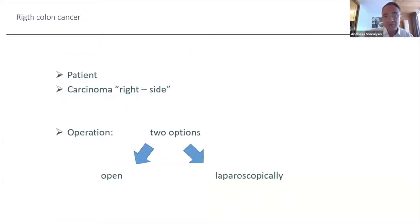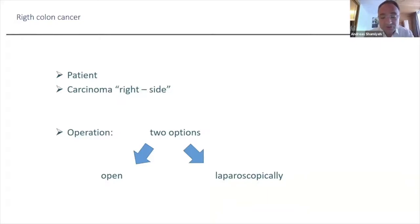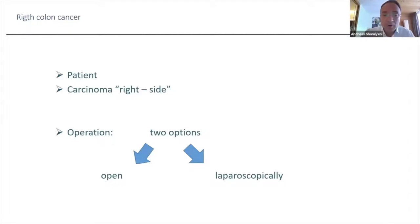When we have a patient with a carcinoma on the right side — ascending colon, right flexure — we have two options: open or laparoscopic. From a survey done in Austria, the percentage of laparoscopic colorectal elective procedures is between 35 and 40%, but right-sided cases are more often done open than left-sided ones. Many clinics perform the right-sided procedure the open way.